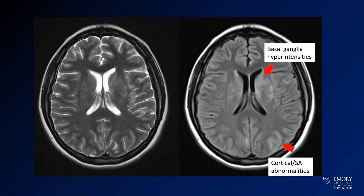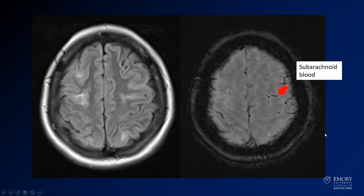Here you'll see that there are some basal ganglia hyperintensities on both T2 and FLAIR, and then you have cortical signal abnormalities following this whole side. As you get a little higher, you have some cortical signal abnormalities on both sides, and you see there's some abnormal susceptibility in the sulci — that's a little bit of subarachnoid blood associated with this.